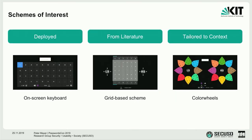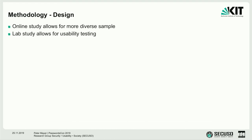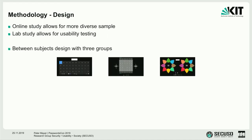We had these three schemes and wanted to evaluate both shoulder-surfing resistance and usability. If you do this type of user study, you can do an online study for a wider and more diverse sample, or a lab study for usability testing. We decided to do both. We used a between-subject design with three groups, each using or attacking one of the schemes, and compared the groups against each other.